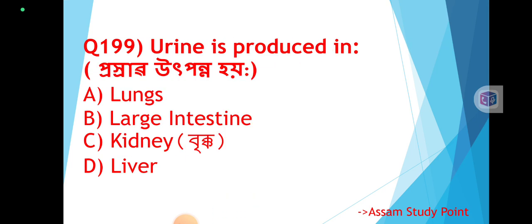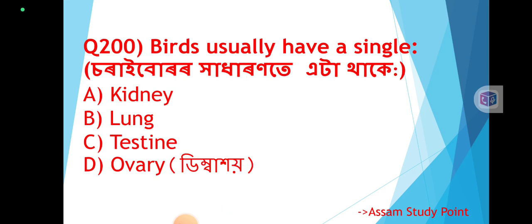Question 199: Urine is produced in — prostrap utpan no hay. The correct answer is Option C: Kidney (Bricot). Question 200: Birds usually have a single — sorryburhadarunte ayeta thake. The correct answer is Option D — birds usually have a single ovary.